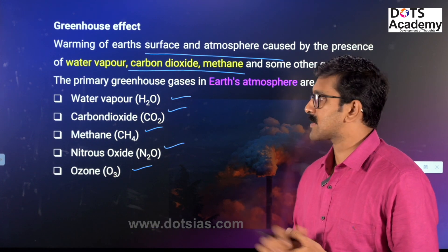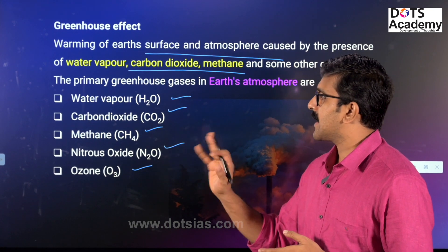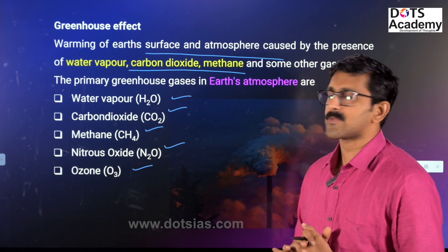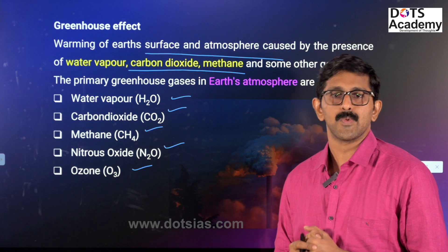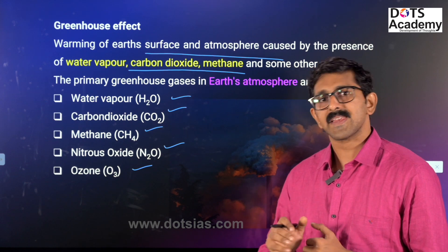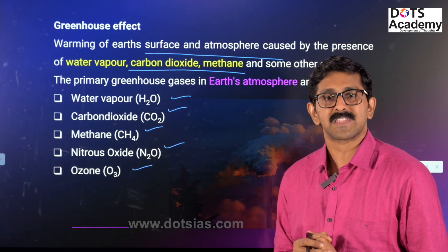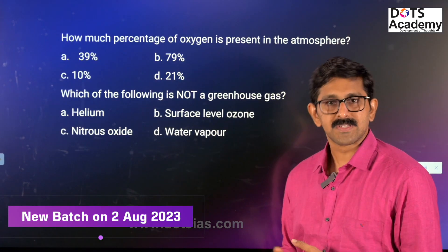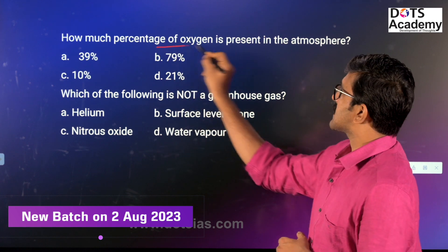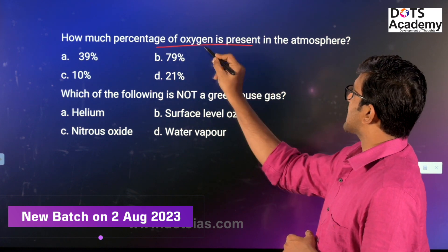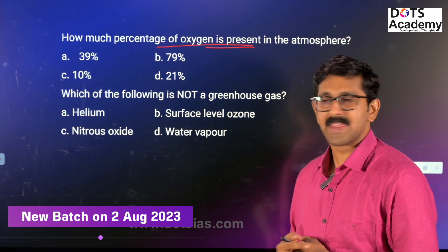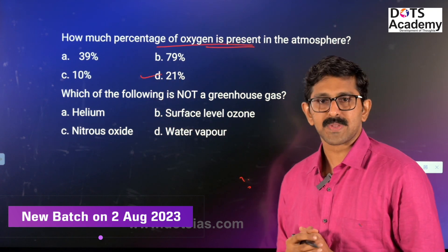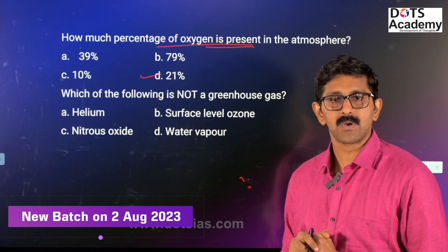The greenhouse gases include carbon dioxide, ozone, methane, and nitrous oxide. Question 1: How much percentage of oxygen is present in the atmosphere? The answer is 21% of the atmosphere is oxygen.